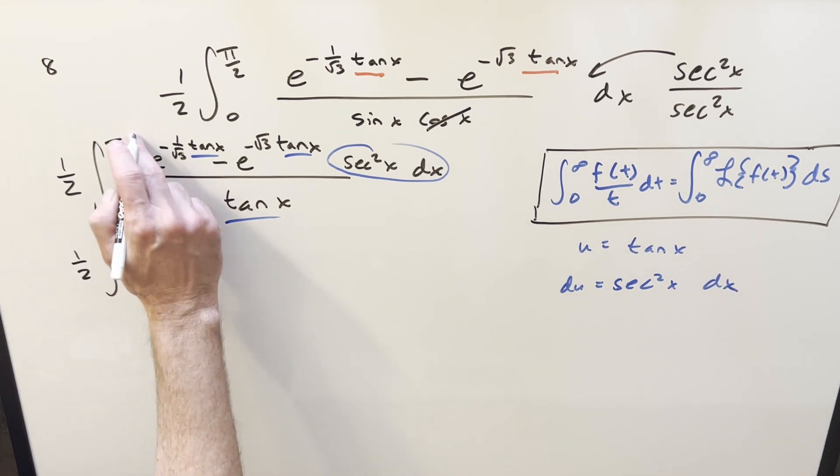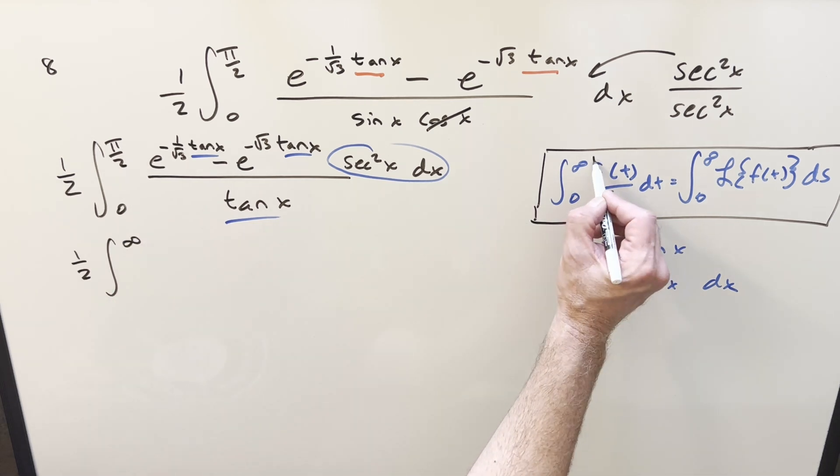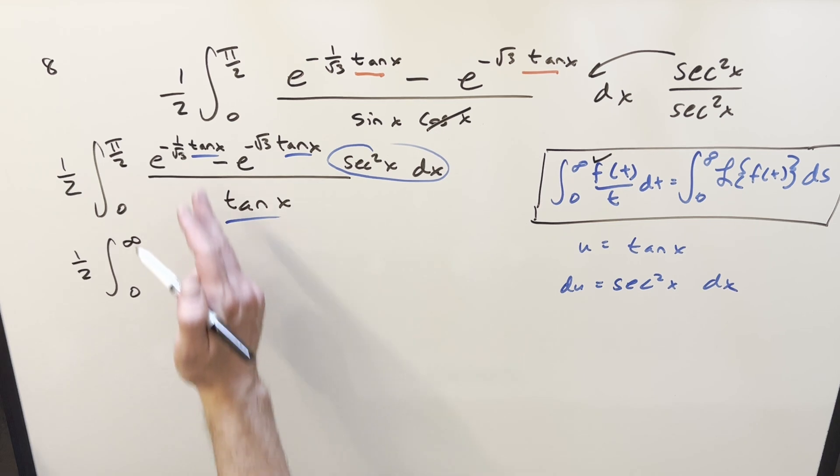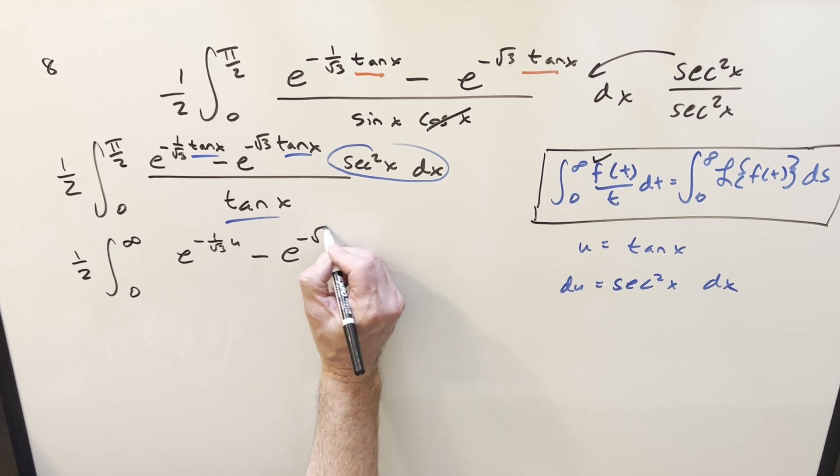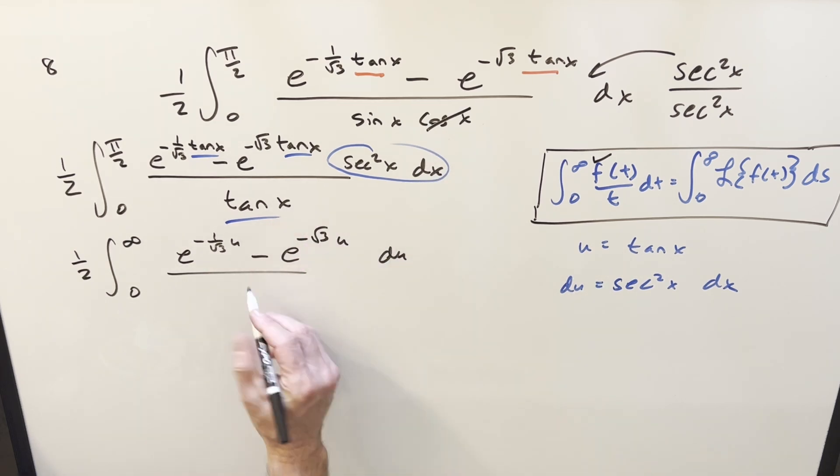Go ahead and substitute. We have our 1 half in front, pi over 2, tan at pi over 2. Now we're going to infinity, just like our formula. Plug in 0, tan at 0, it's just 0. Then rewriting all this, we have e minus 1 over square root of 3u. And this one's just going to become e minus square root of 3u. This is just our du over here, and this is just u. But now with the substitution, this is going to match our formula exactly.